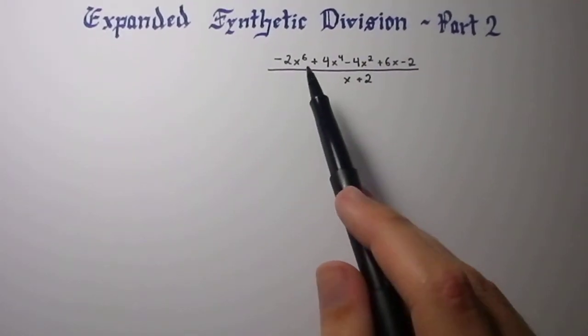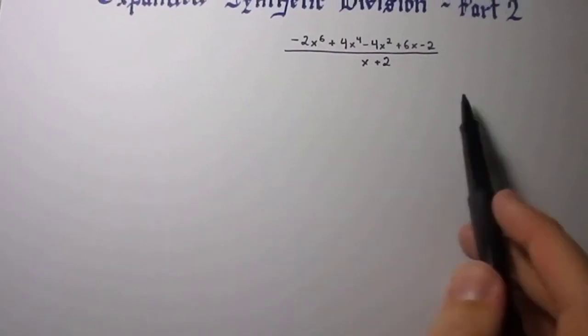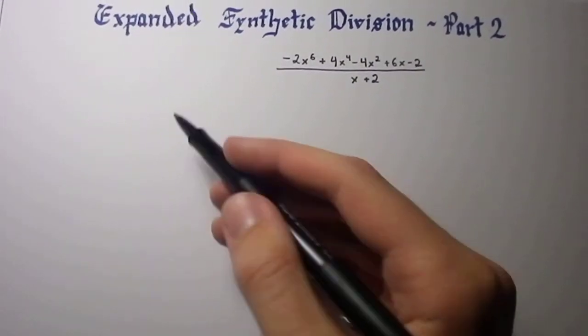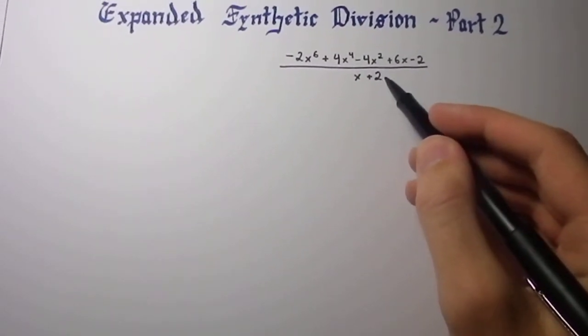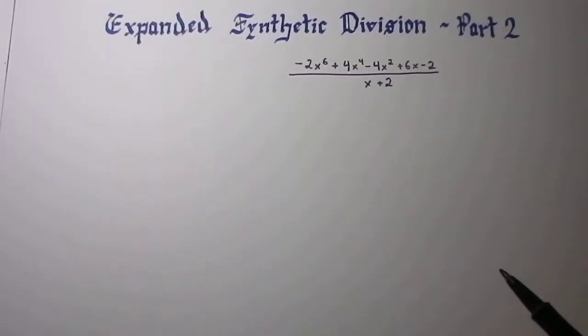Remember, in regular synthetic division, you write down all the coefficients down, and then in the pocket, write minus 2. That's because you negate this plus 2 in the divisor, and you carry on synthetic division.